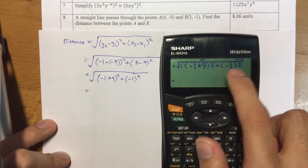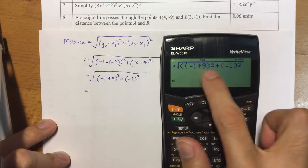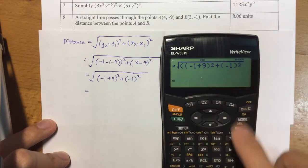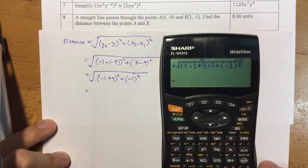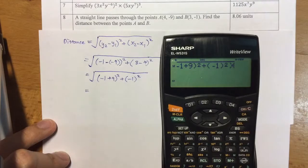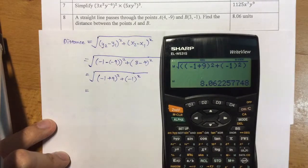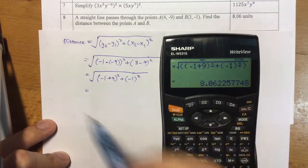These brackets are paired up together. We still have the last bracket here to show that I want the final value of the addition of these two things. Close the bracket, and I get the value of 8.06 to three significant figures.